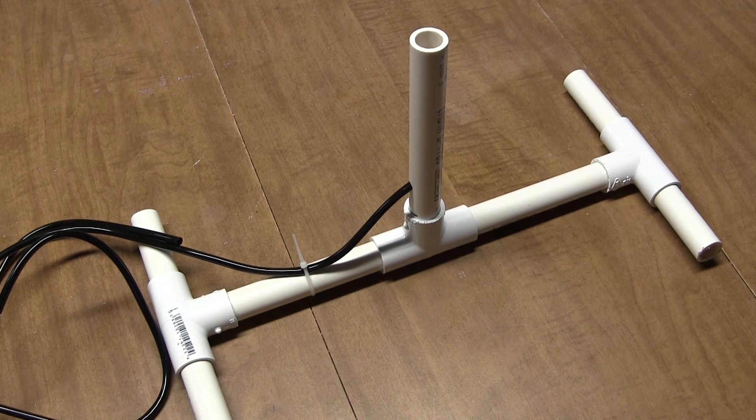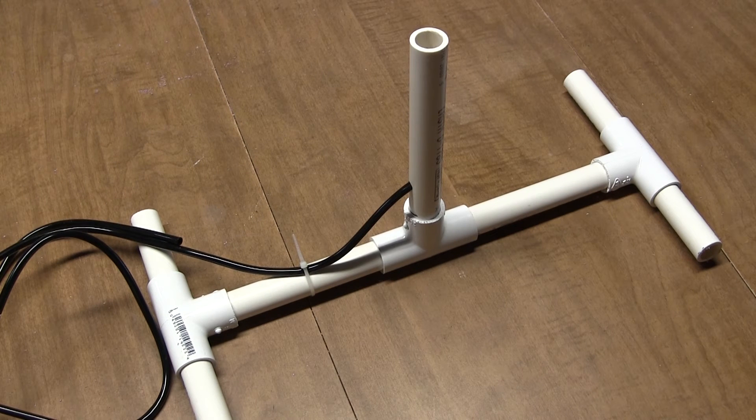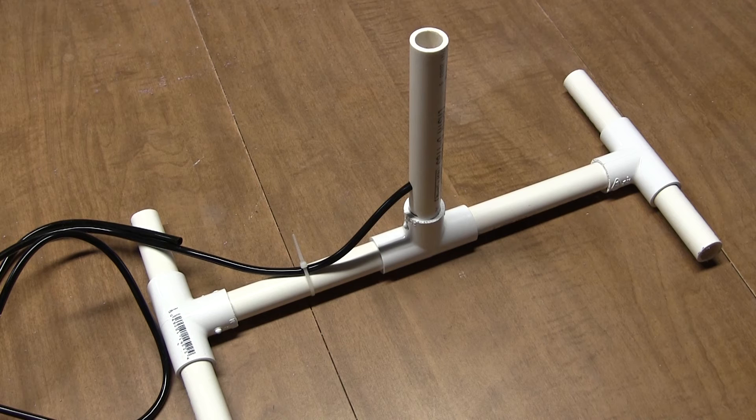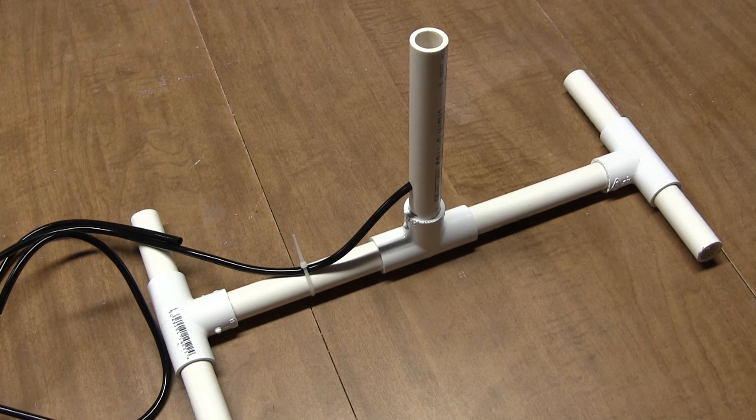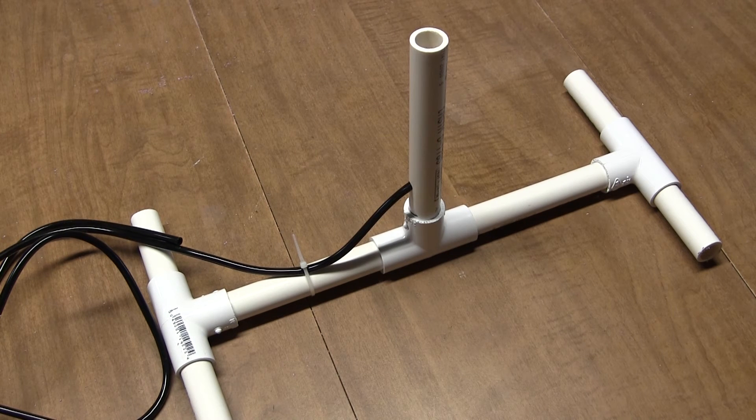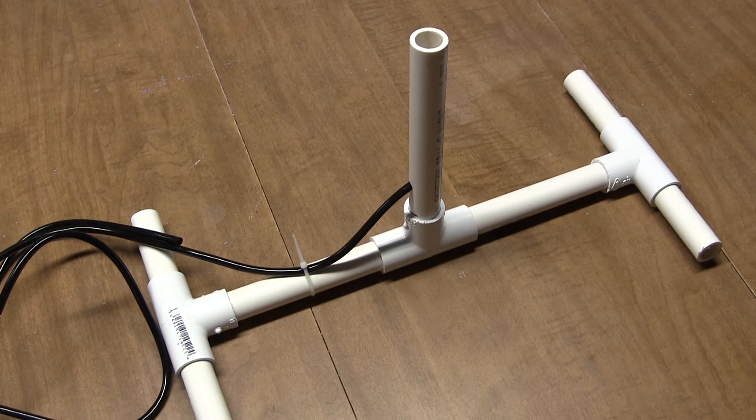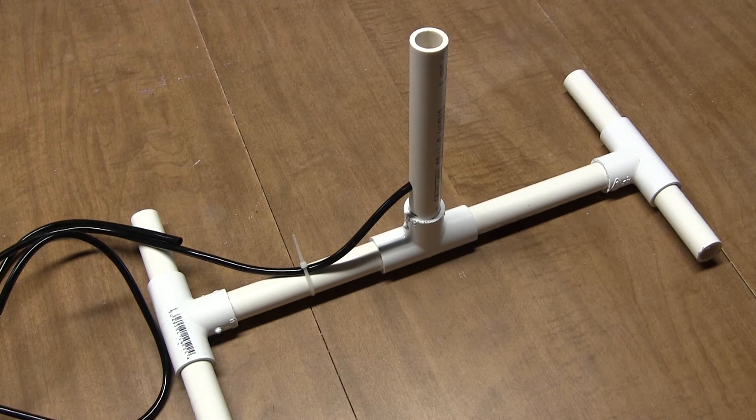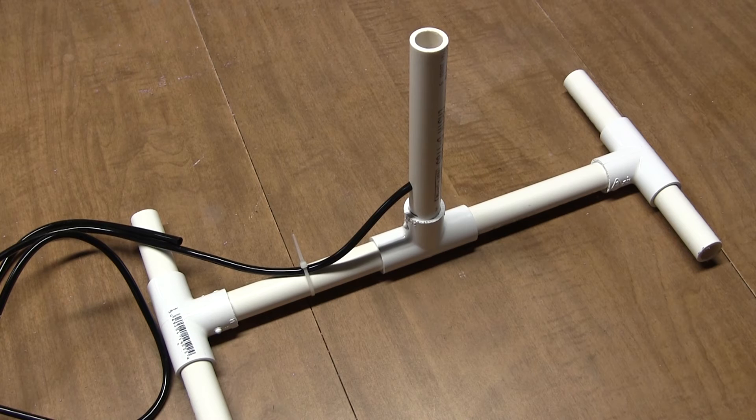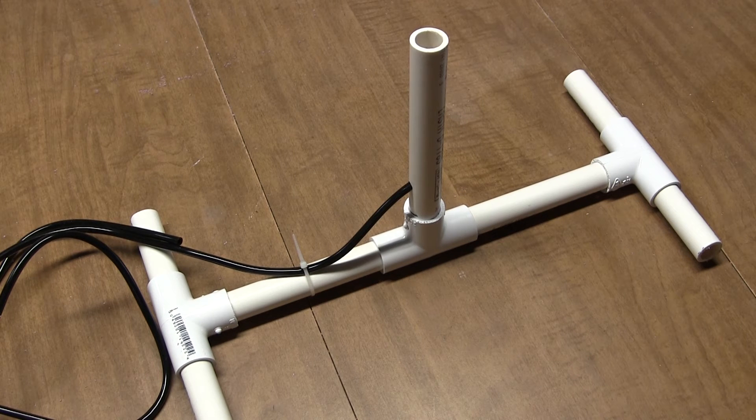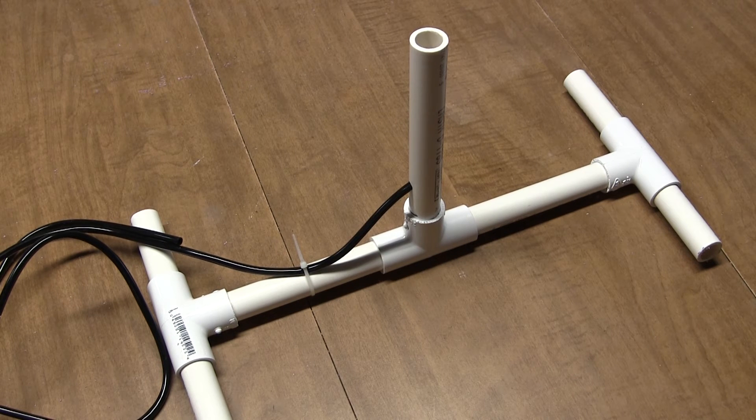Just want to point out that all of these connections are just pushed together. There's no glue involved in doing this. It's not under pressure. It doesn't matter if it leaks a little bit of air and water. So this makes for easy construction. You can cut this half inch PVC pipe with an ordinary hand saw, jigsaw, coping saw, any kind of saw.